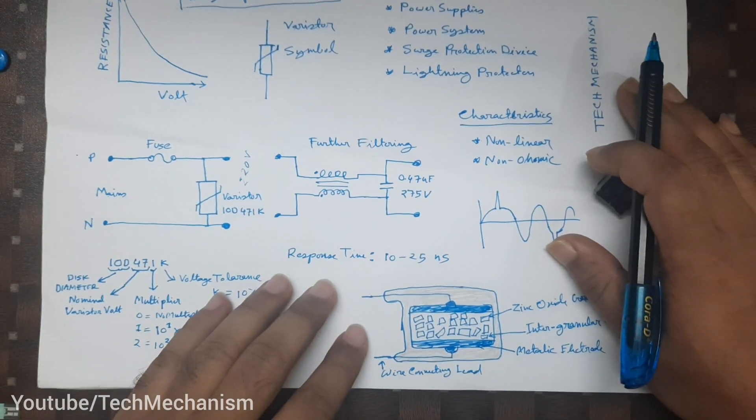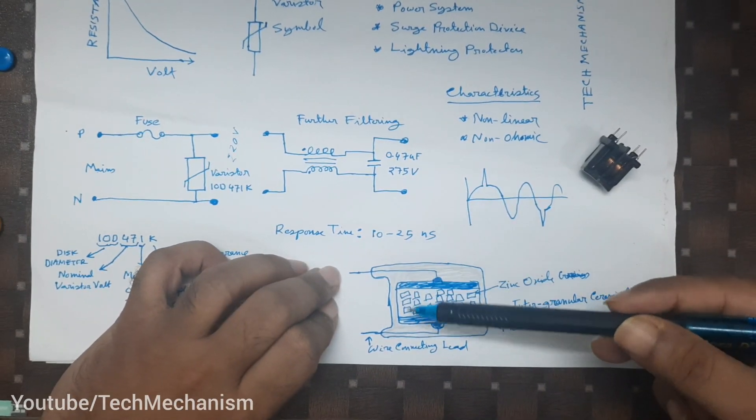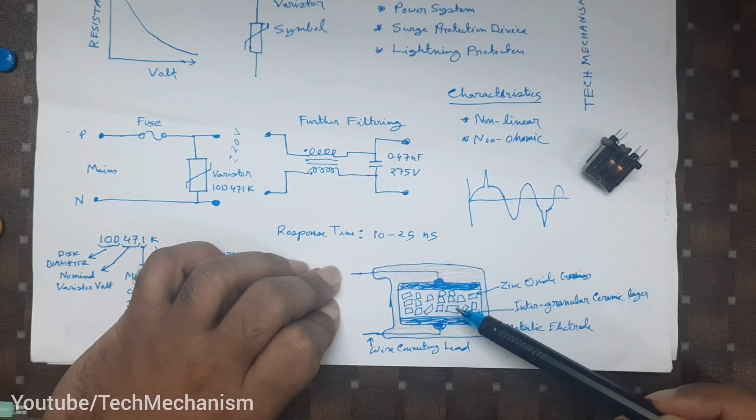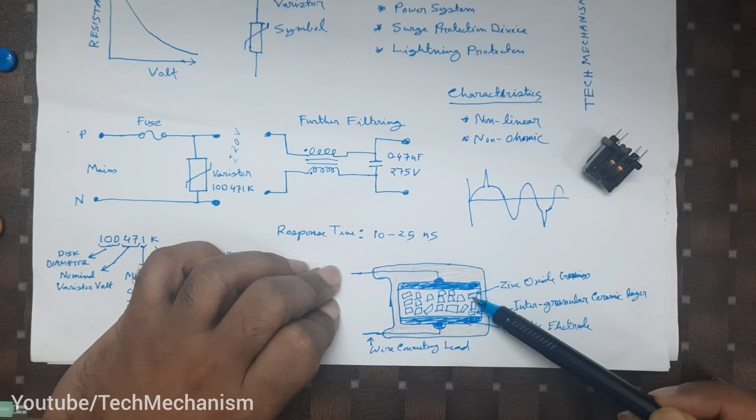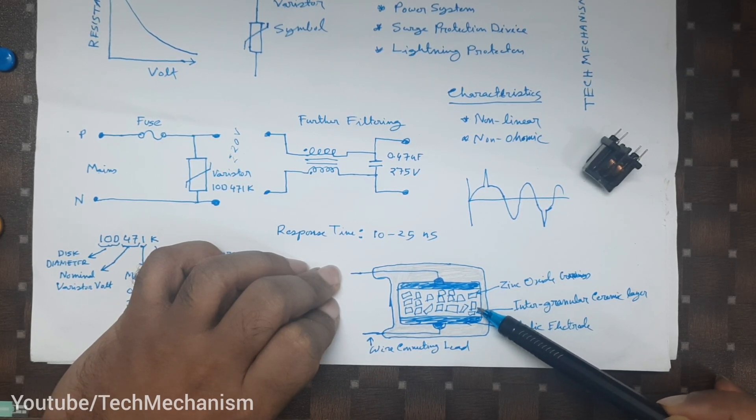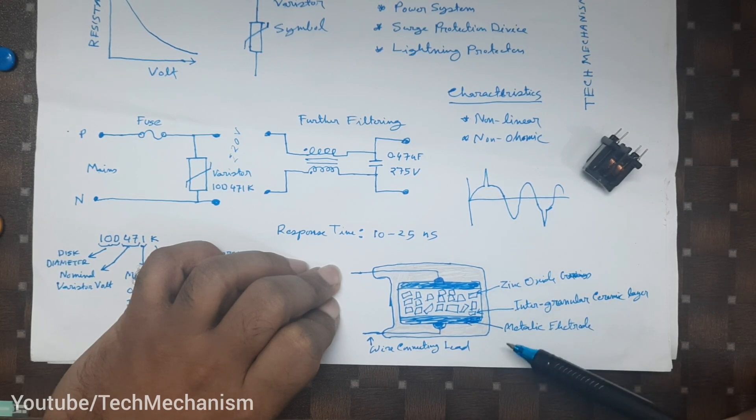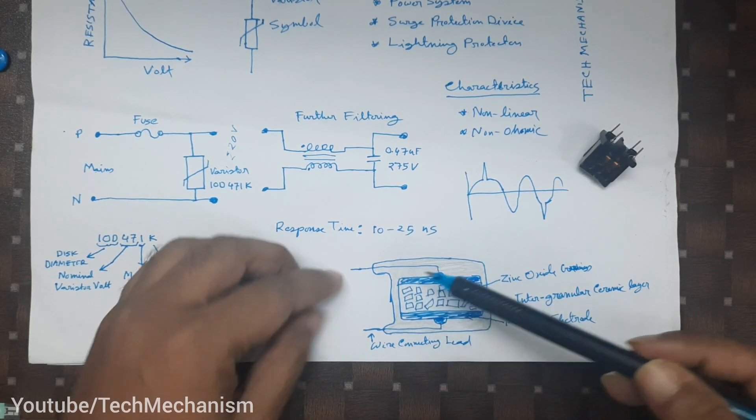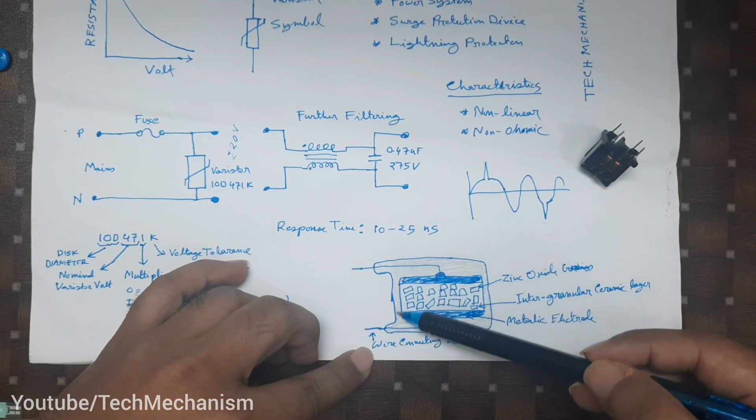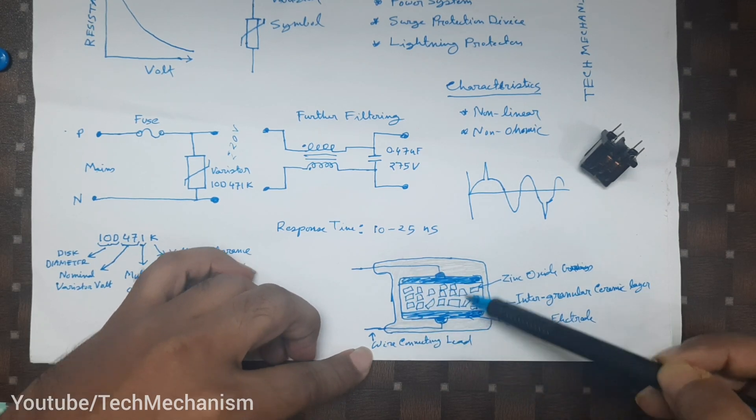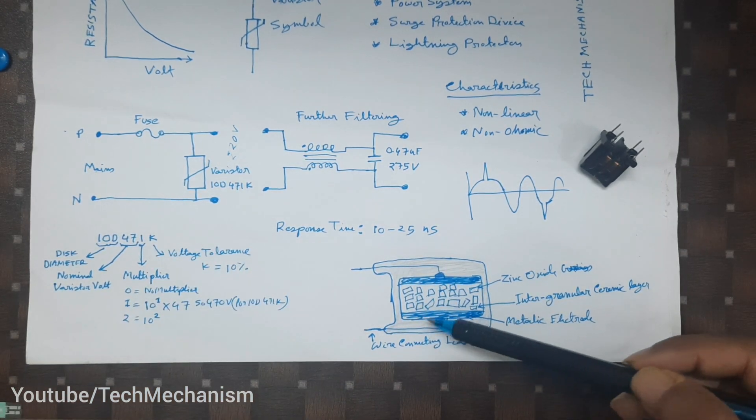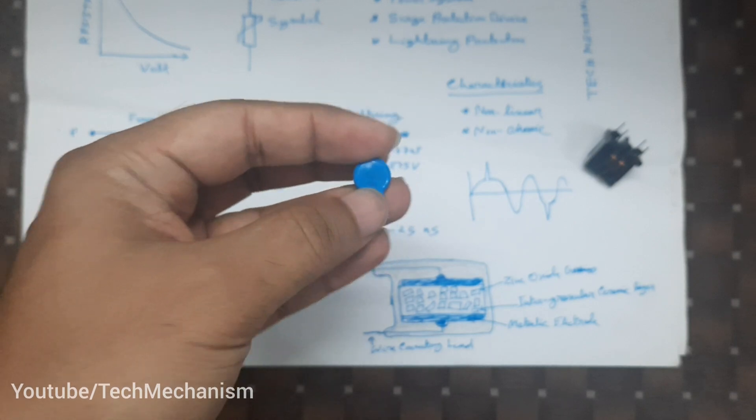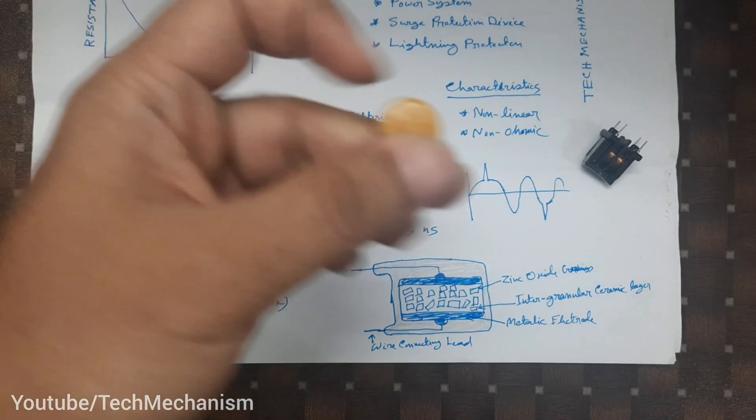There are lots of applications of the varistor. The construction of metal oxide varistor is actually like that. This is the very high level diagram. Here we can see the inside has zinc oxide grains, and the inner part is ceramic layer. The outer layer is metallic electrode connected with this conducting lead, and this whole thing is covered by epoxy. This is actually a varistor, and here we have another varistor.